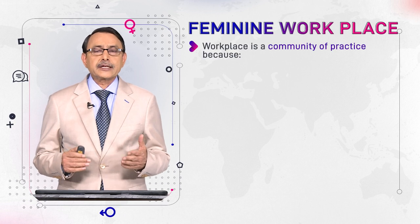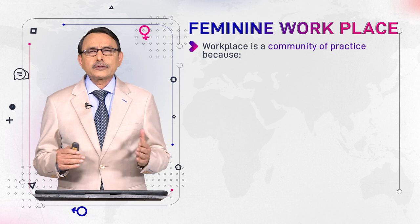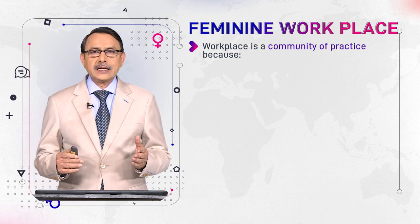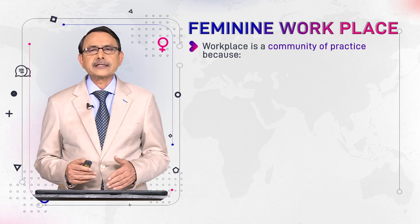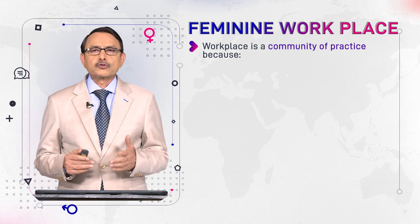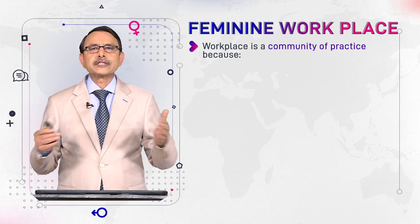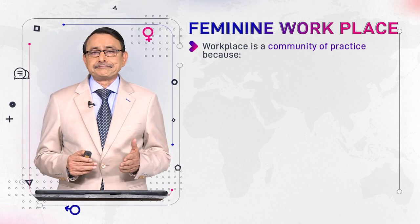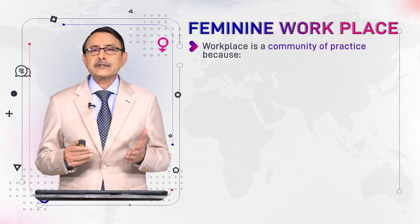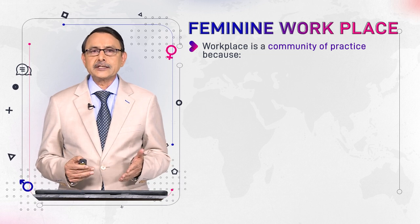In this module we are talking about workplace with reference to some other features and dimensions. First of all, workplace is also a community of practice. The whole society is organized into social groups, each called a community of practice — that can be family, your office, or your campus. The total of such communities of practice is called society. The workplace is also a community of practice because it shares the major features of a community of practice, or CoP for short.